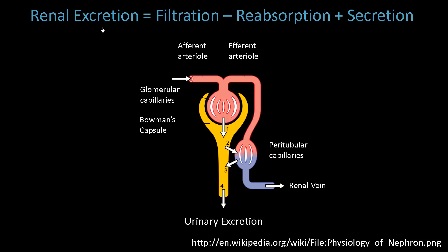Let's talk about the renal excretion of drugs. The kidney is the most important organ for drug excretion. If the kidney is not working, for most drugs we can assume that excretion is impaired and the levels of the drug or its metabolites can build up and cause problems. Renal excretion is the sum of the drug that is filtered, minus the drug that is reabsorbed, plus the drug that is secreted at the level of the nephron.